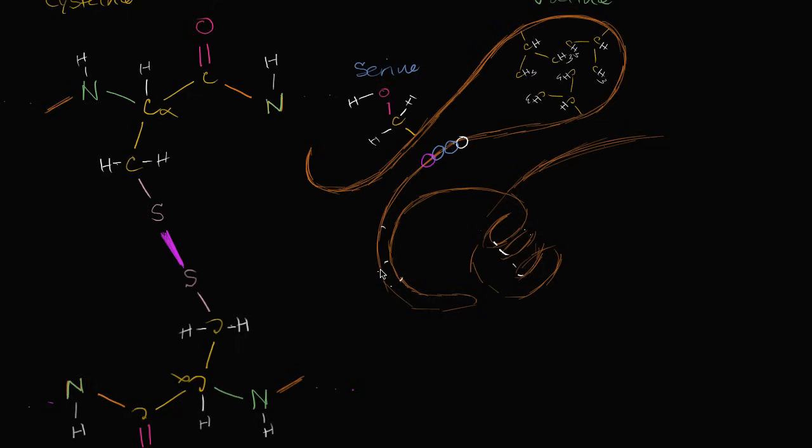Then you could have interactions between the backbone. And so that could be, maybe this is an anti-parallel beta pleated sheet right over here, where you have hydrogen bonds. I'm trying to draw a dotted line, but it's really small. Or you have the hydrogen bonds right over here, between these two backbones.